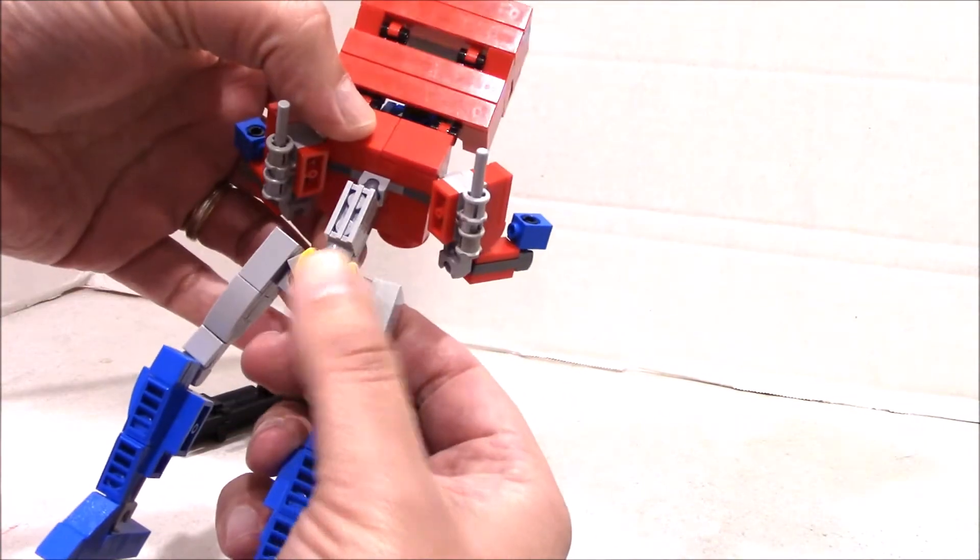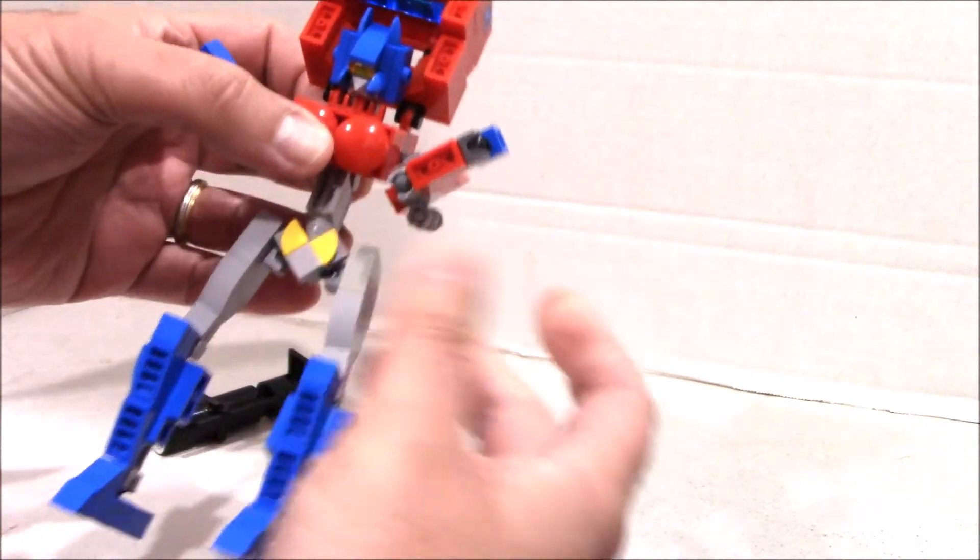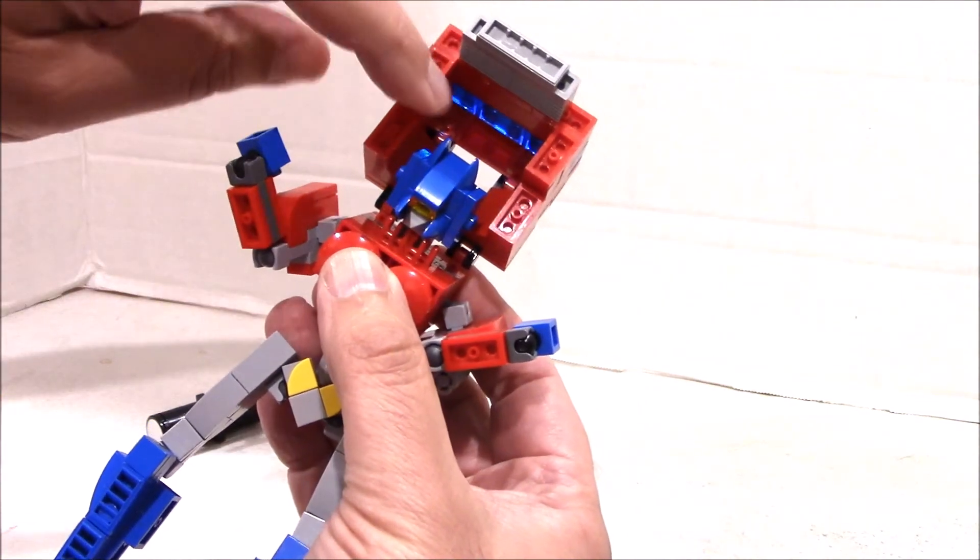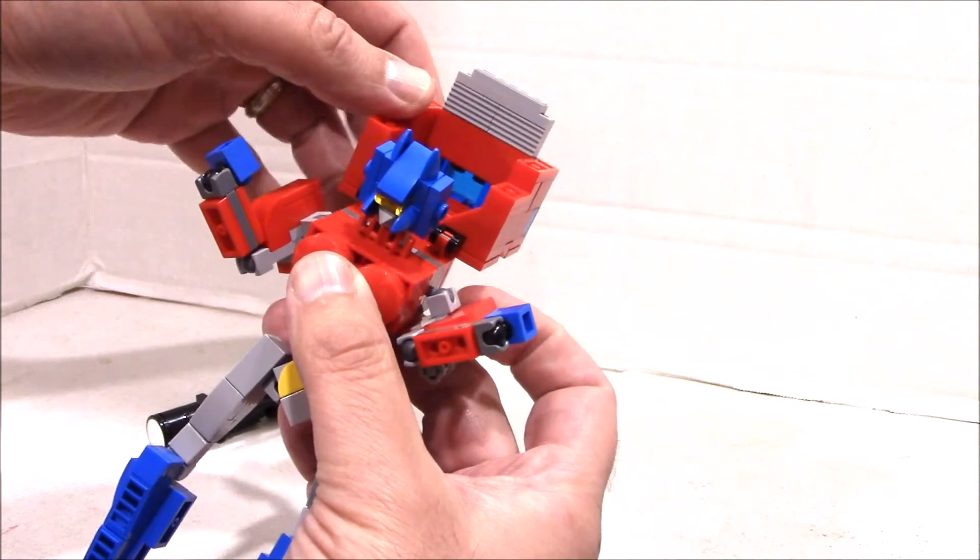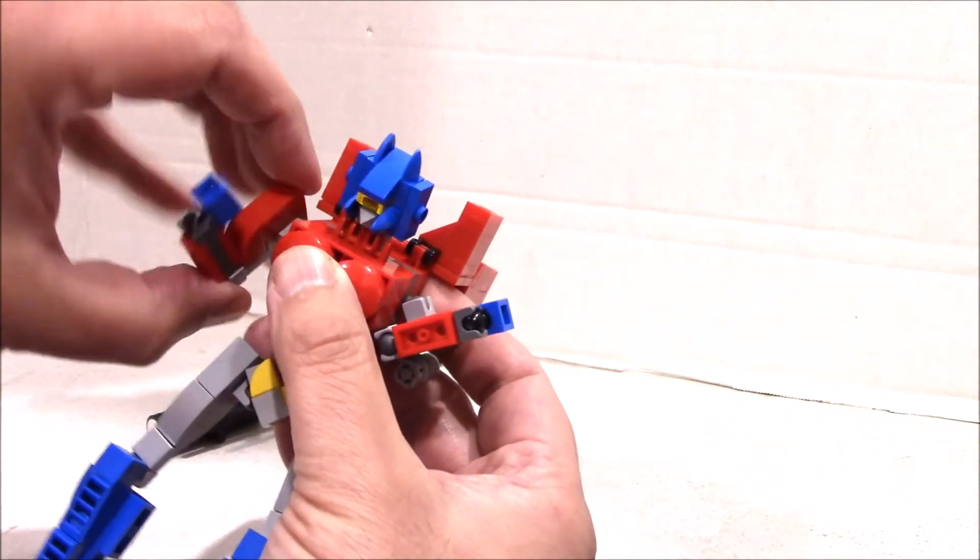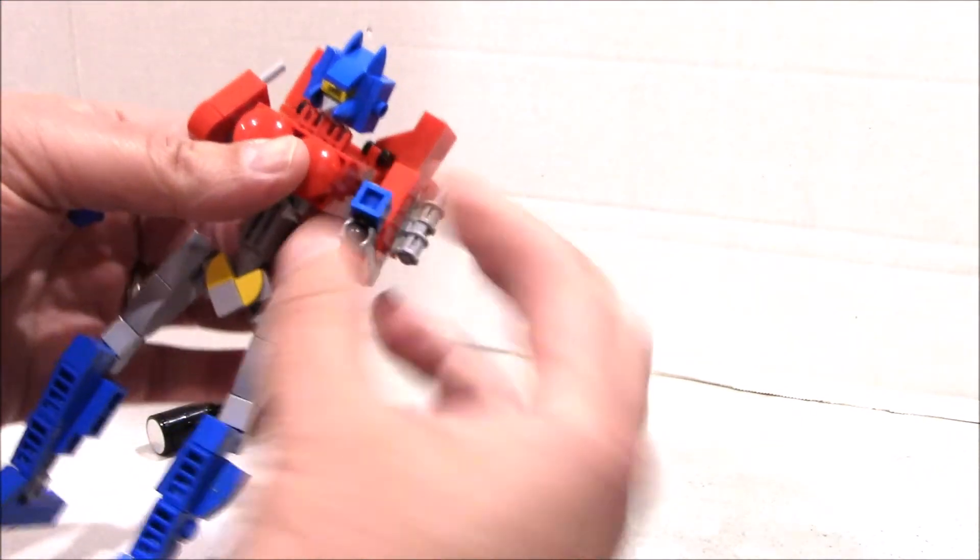Then twist it around again like so. Now we're going to take this whole section - the cab - and fold it down to become the backpack. Then we're just left with Optimus Prima's arms.